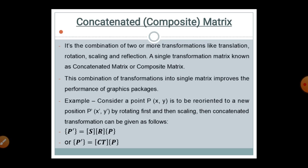This combination of transformations into a single matrix improves the performance of graphic packages. Consider operations like scaling or moving an object on the computer screen, like panning any object — this is called a composite matrix operation. For example, zooming pictures on a mobile is a scaling operation. This kind of composite matrix is used to perform such operations in the mathematical formation displayed on a computer or mobile screen.